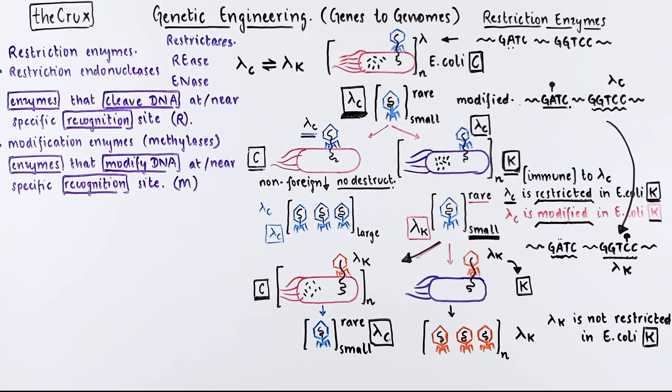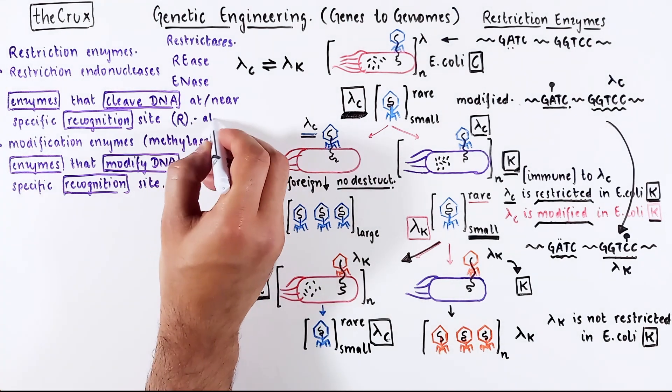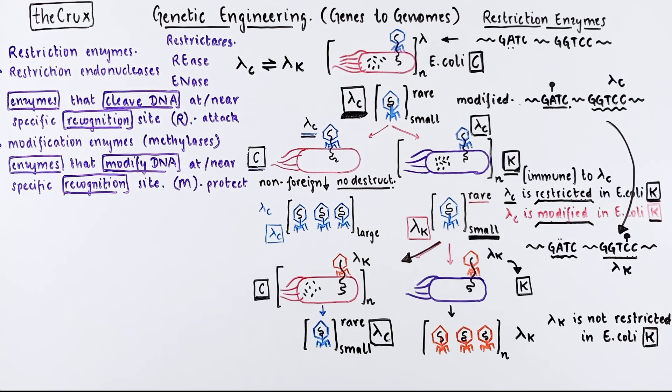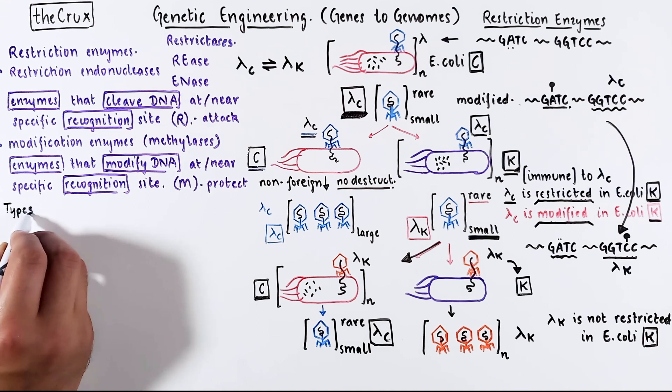Restriction system is meant as an attack system. The modification system, by and large, is meant as a protect system. But there are cases where it is also used to attack. So protection is not a universal feature.